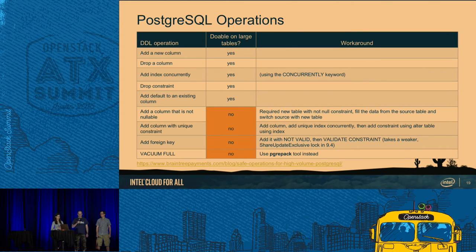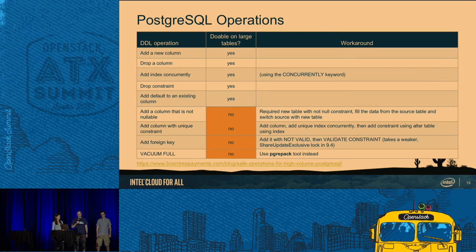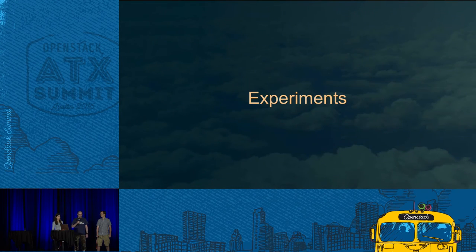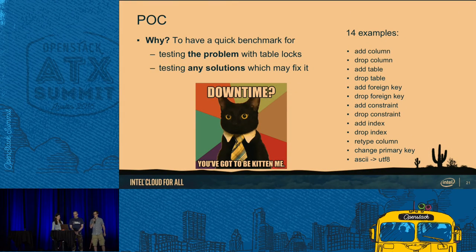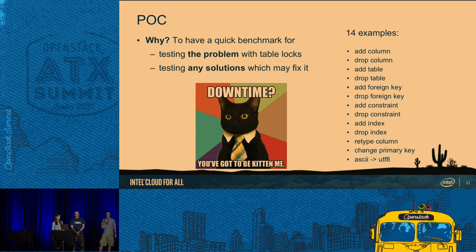On PostgreSQL it's different because it handles these operations internally in a different way. We experienced some problems, for example with adding a foreign key. There are some workarounds, however they are not perfect. We did some experiments — the idea of introducing this POC was made at the last Keystone mid-cycle. We needed a way to quickly test the problem and test any solutions which may fix it, and there were 14 examples proposed to test.